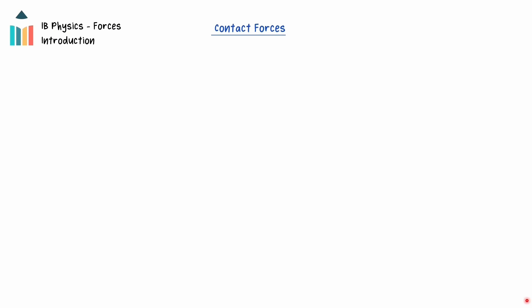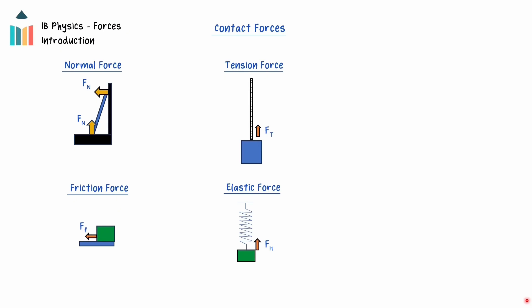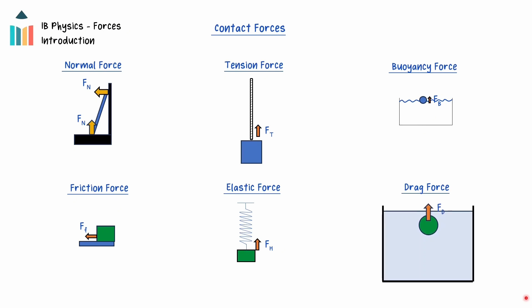There are many contact forces that can act between objects, including the normal force, the friction force, the force of tension, the elastic restoring force, the buoyancy force, and the drag force. Each of these forces will have their own formulas and rules for the direction of the force, so let's examine them individually.